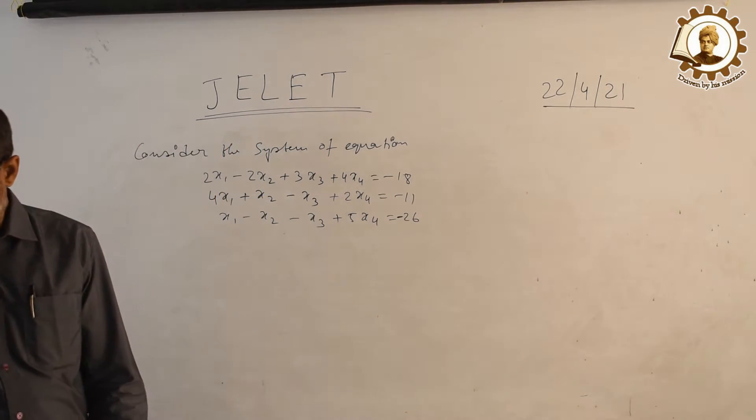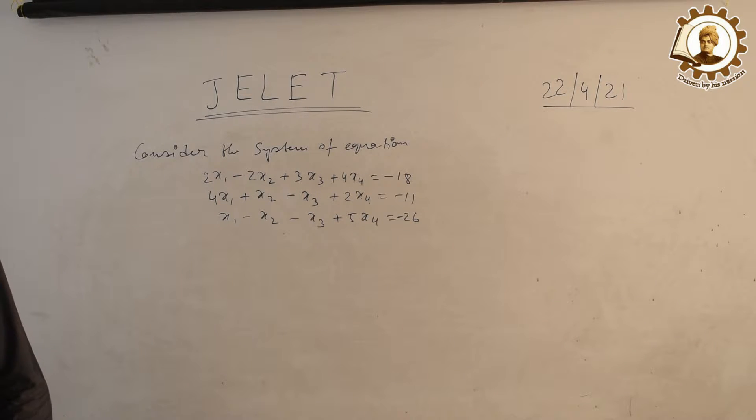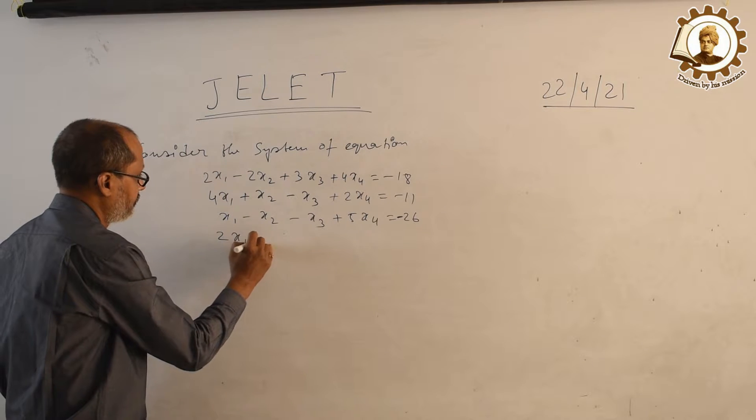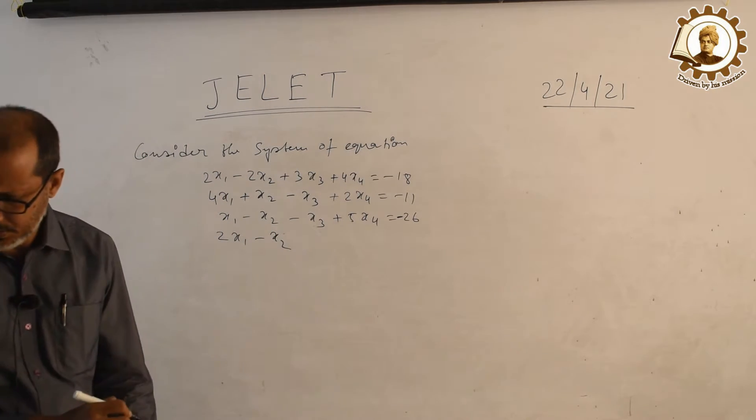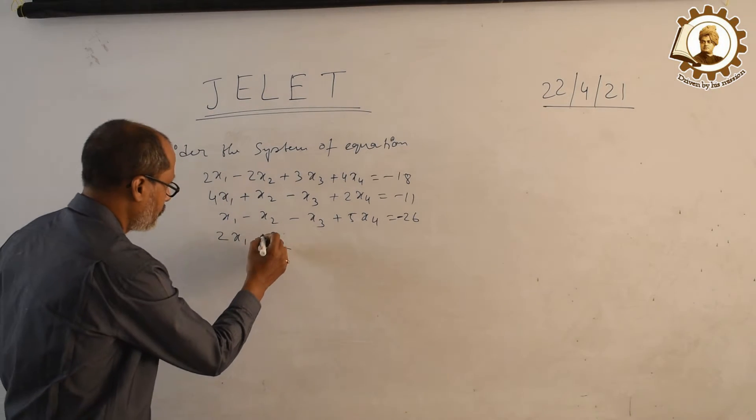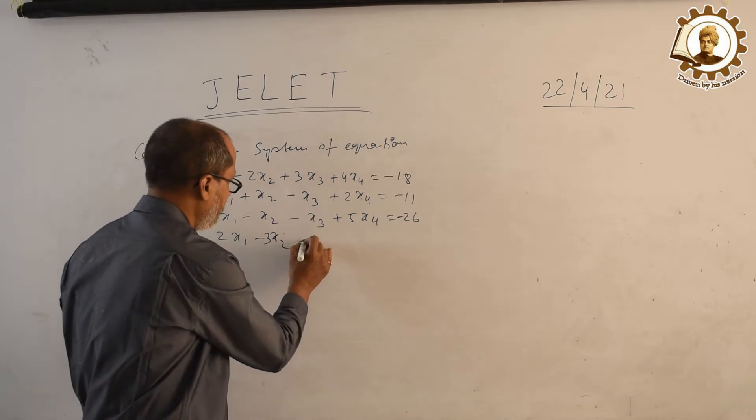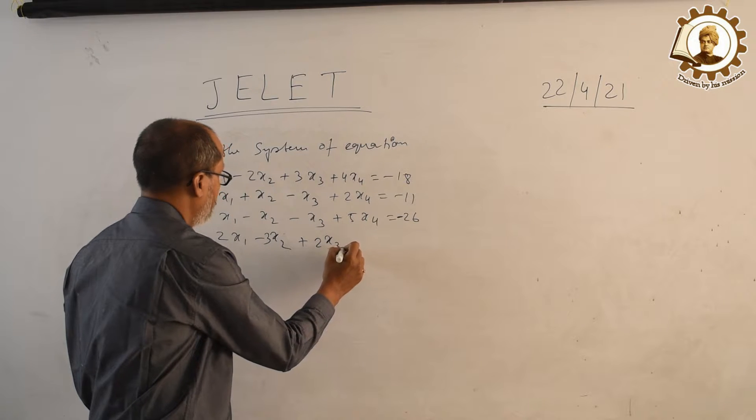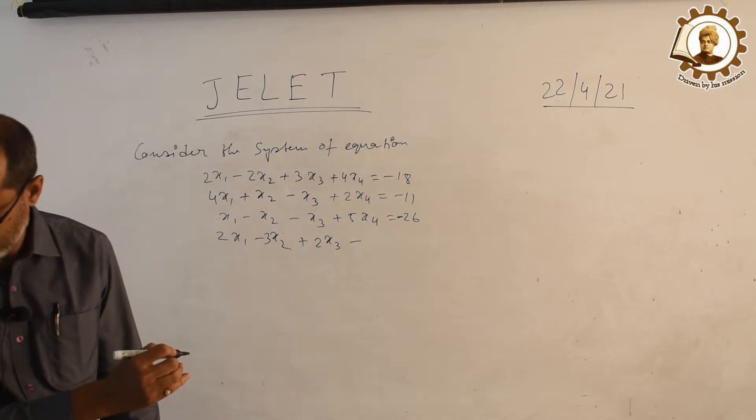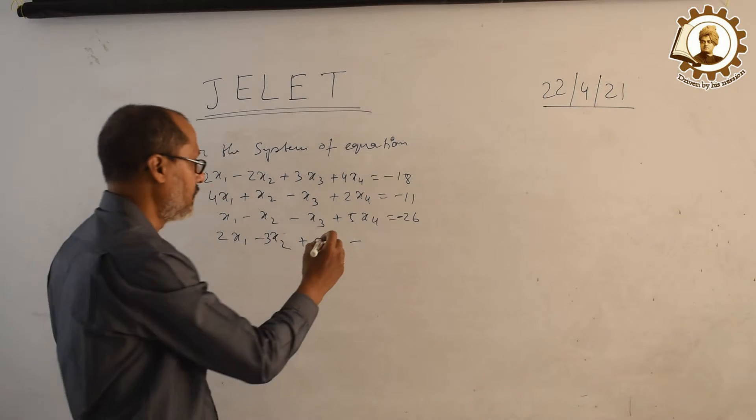2x1 minus x2 minus 3x2 plus 2x3 minus x4 equals minus 3.